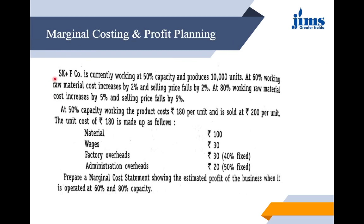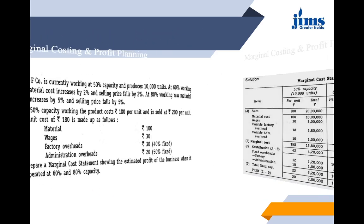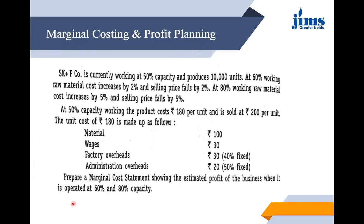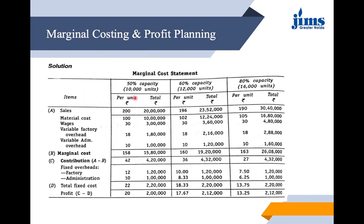Question: SK&F Company is currently working at 50% capacity and produces 10,000 units. At 60% working, raw material cost increases by 2% and selling price falls by 2%. At 80% working, raw material cost increases by 5% and selling price falls by 5%. At 50% capacity, product costs are Rs. 180 per unit sold at Rs. 200 per unit — comprising materials Rs. 100, wages Rs. 30, factory overheads Rs. 30, administration overheads Rs. 20, of which 40% of factory overheads and 50% of administration overheads are fixed. We need to prepare a marginal cost statement showing estimated profit at 60% and 80% capacity.